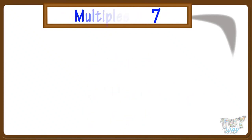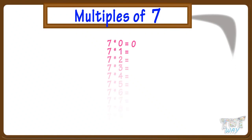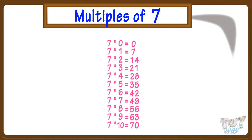Now, here we have another number, 7. Let's list its multiples. Multiples of a number are all numbers that come in its step counting or multiplication table. So multiples of 7 are 0, 7, 14, 21, 35, 42, 49, 56, 63, 70, and so on.